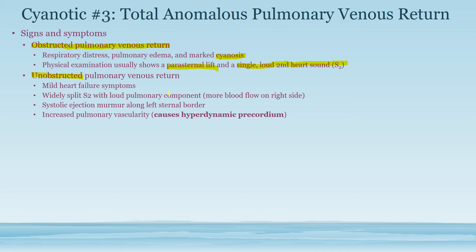In the unobstructed form, you also have a widely split S2 with a loud pulmonary component. This is because there is excessive blood flow on the right side, and with inspiration you get a split S2 from decreased intrathoracic pressure causing more blood into the right heart, delaying the P2 heart sound. The excessive blood on the right side produces a widely split S2 with a loud pulmonary component. You also get a systolic ejection murmur along the left sternal border, caused by a flow murmur from too much blood going across the pulmonic valve.